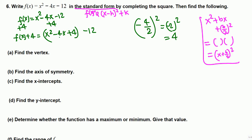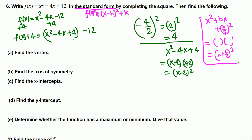We factor x squared minus 4x plus 4, which is a perfect square: x times x gives x squared, and 2 times 2 gives 4, with negative signs giving negative 4x. So this factors to (x minus 2) squared. Moving the 4 to the other side by subtracting, we get f(x) equals (x minus 2) squared minus 16. This is now in standard form.